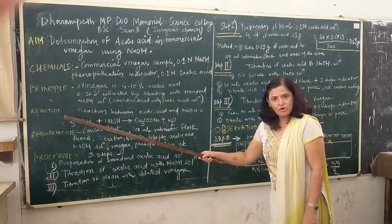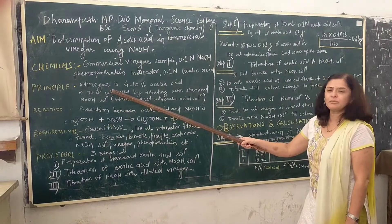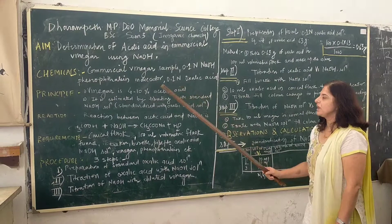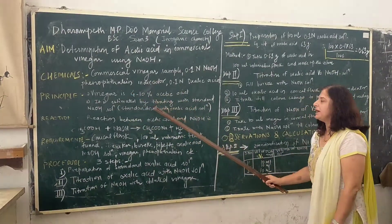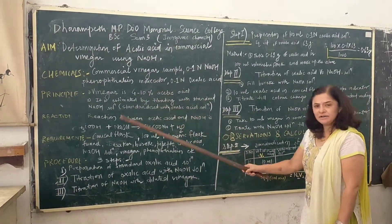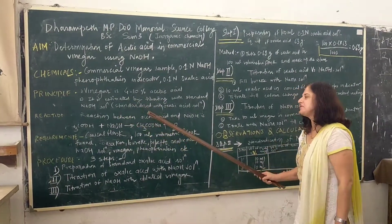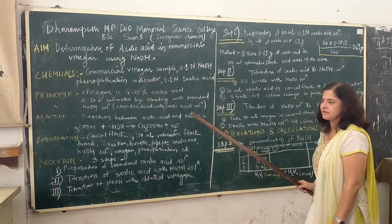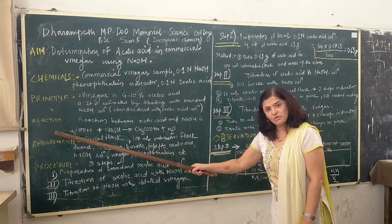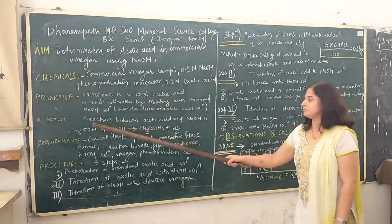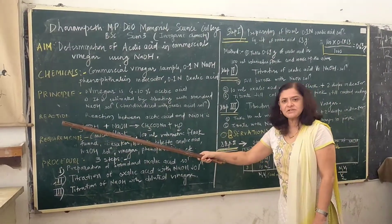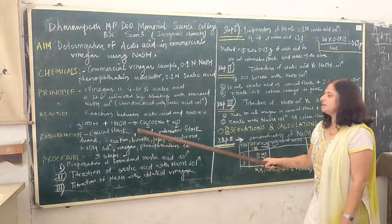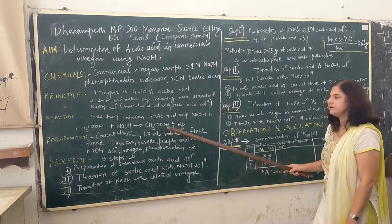The principle involved in this experiment is that the vinegar sample is a 4 to 10 percent acetic acid solution. It is estimated by titrating with standard NaOH solution, which is previously standardized with oxalic acid solution. Oxalic acid is a primary standard here. As this is an acid-base titration, acetic acid reacts with sodium hydroxide to give sodium acetate (salt) and water.